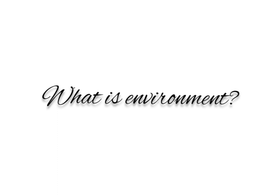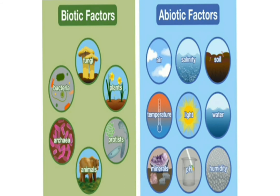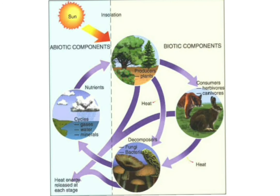Environment is important for the survival of all living organisms. The surroundings in which a plant, animal, or organism lives is called the environment. It refers to the variety of living and non-living things along with the interactions that affect an organism. In an environment there are biotic factors, which are the living components, and abiotic factors, which are the physical or non-living components.